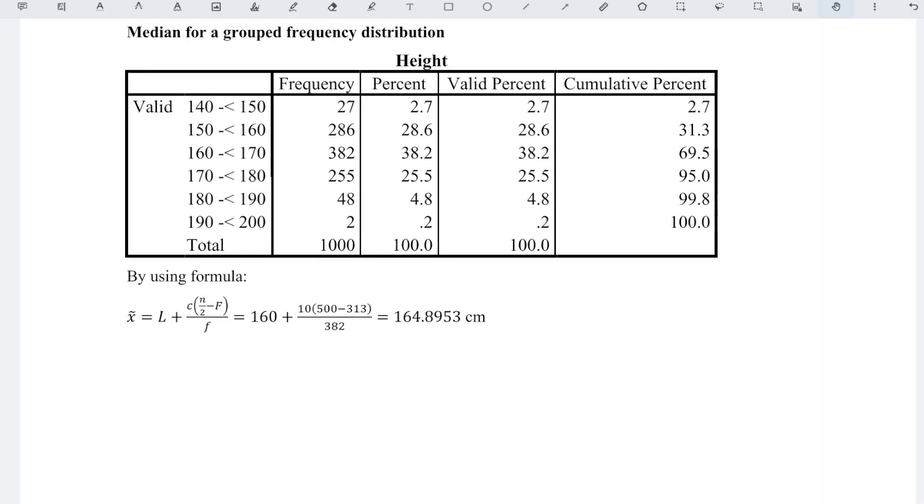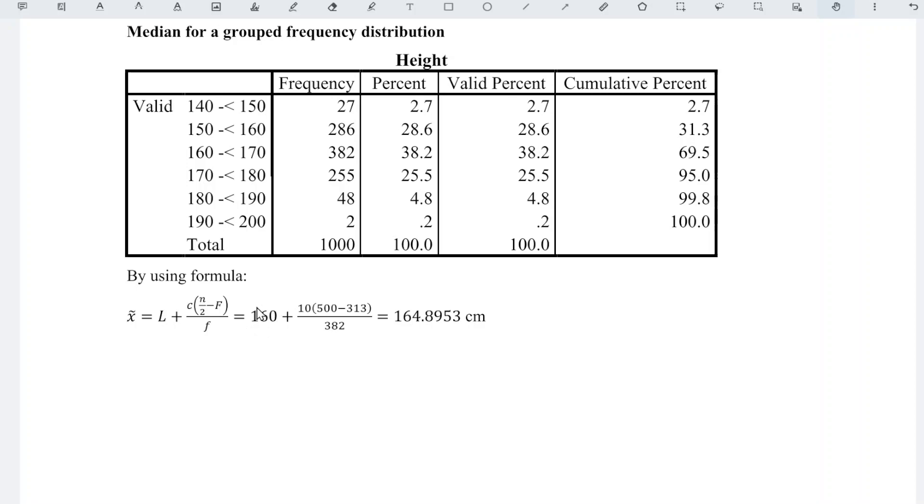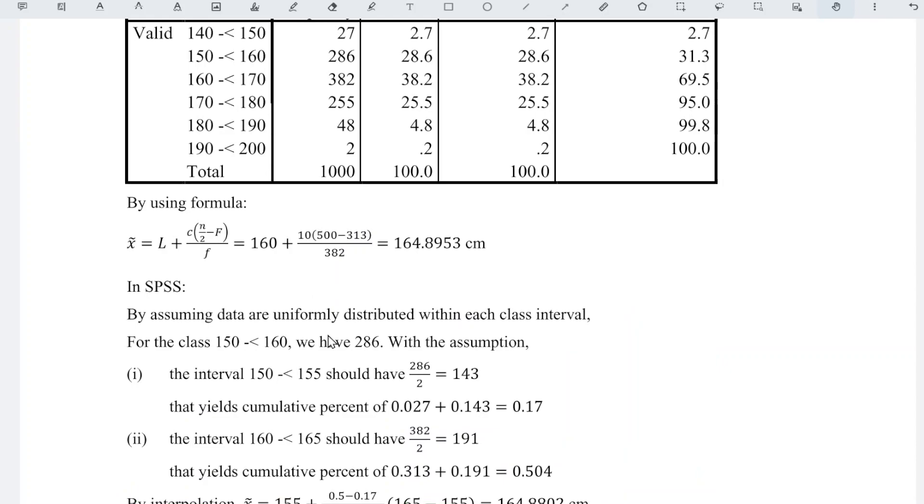This is because SPSS doesn't use the value lower class boundary. Recall what we use in generating the median in SPSS are the group midpoints. In order to make use of the group midpoints in generating the median, SPSS assumes that the data are uniformly distributed within each class interval.